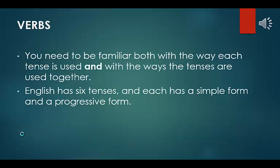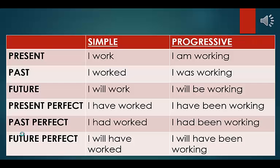Now on to verbs. You need to be familiar with the way each tense is used and with the ways the tenses are used together. English has six tenses, and each has a simple form and a progressive form. Present tense: simple — I work; progressive — I am working. Past tense: simple — I worked; progressive — I was working. Future tense: simple — I will work; progressive — I will be working. Present perfect: simple — I have worked; progressive — I have been working. Past perfect: simple — I had worked; progressive — I had been working. Future perfect: simple — I will have worked; progressive — I will have been working.